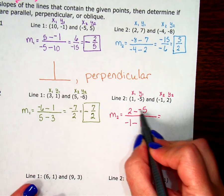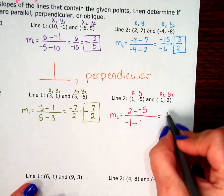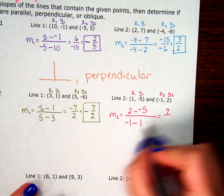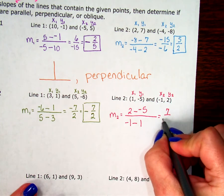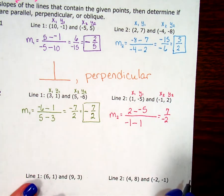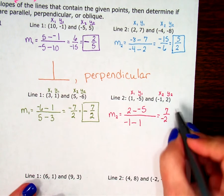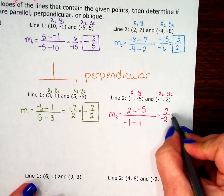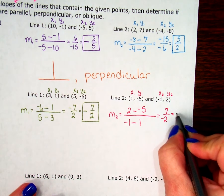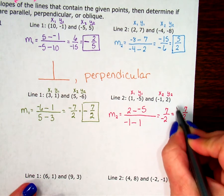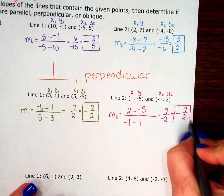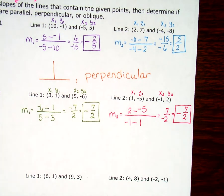2 minus a negative 5 is really 2 plus 5. So that's 7. Negative 1 minus 1 is negative 2. The negative we don't want to leave down there in the denominator so we can bring it out in front. 7 over 2 with the negative out in front. There's my two slopes.